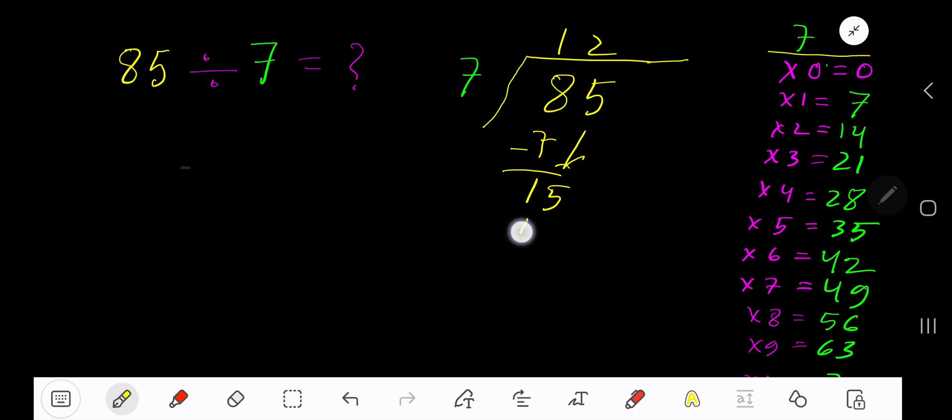So 2 times. 2 times 7 is 14. Subtract to get 1. So our answer is 12 remainder 1. But if you want to write your answer in decimal form, then take your decimal, add number of zeros, bring down the first zero. Before this zero there's a decimal. The decimal must come to the quotient directly. 7 goes into 10 how many times?